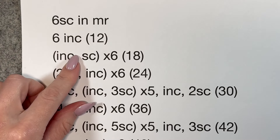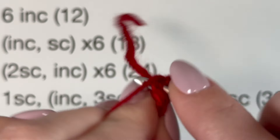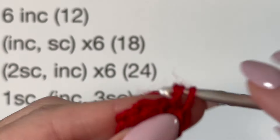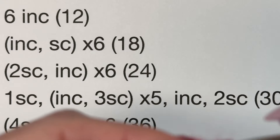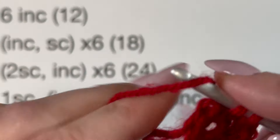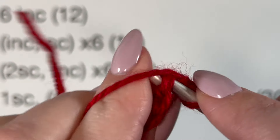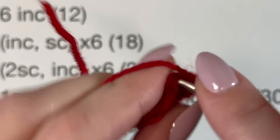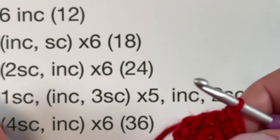So what does this actually look like when I'm crocheting? I have six single crochets in a magic ring, and now I'm going to do six increases. I say: '1 A, 1 B' — that's my first increase. '2 A, 2 B' — second increase. '3 A, 3 B, 4 A, 4 B, 5 A, 5 B, 6 A, 6 B.' And that's my second row.